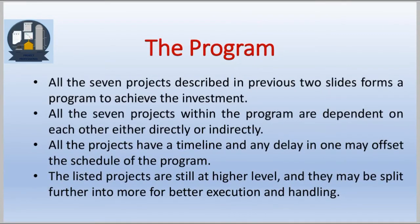All seven projects described form a program to achieve the investment objective. All seven projects within the program are dependent on each other, either directly or indirectly. This dependency may vary — it may have a relationship as simple as finish-to-start, or it may be finish-to-finish, or it may be a complex relationship. All projects have a timeline, and any delay in one may offset the schedule of the program itself.